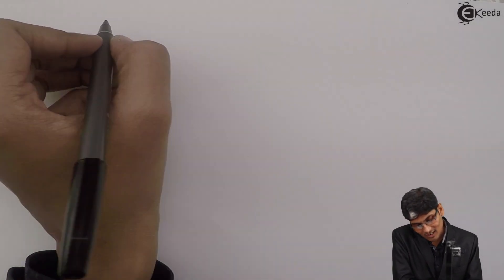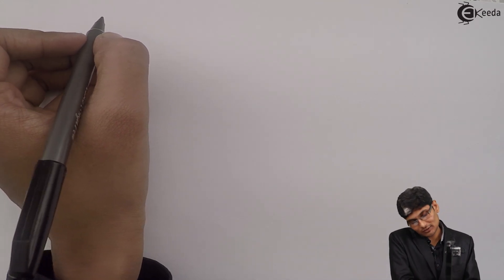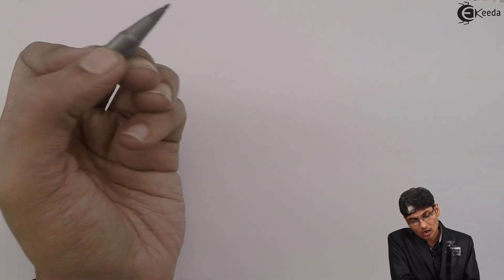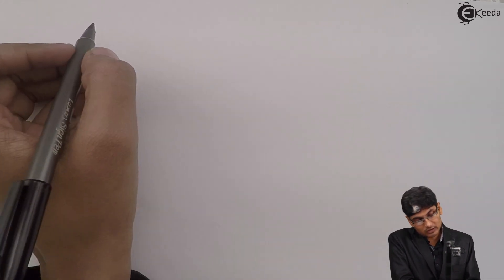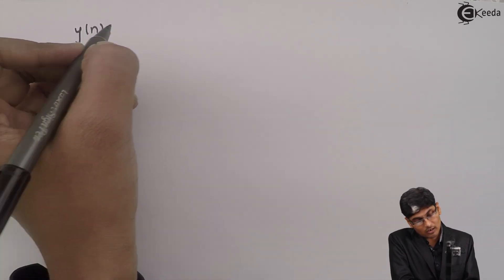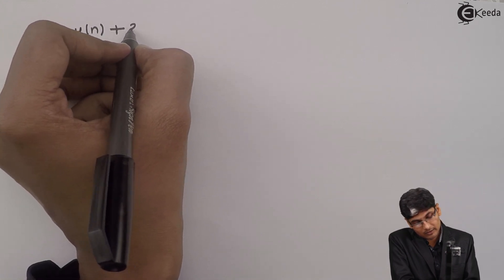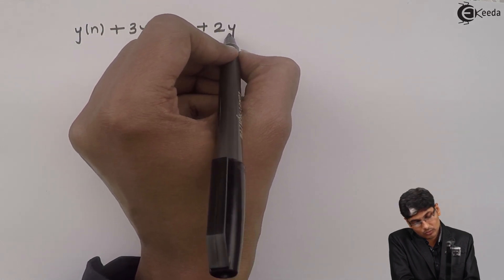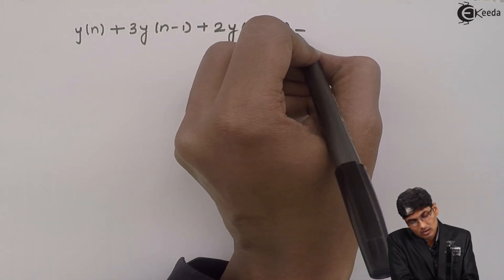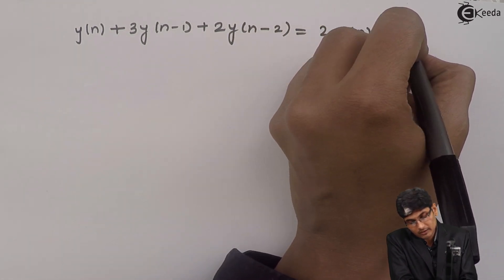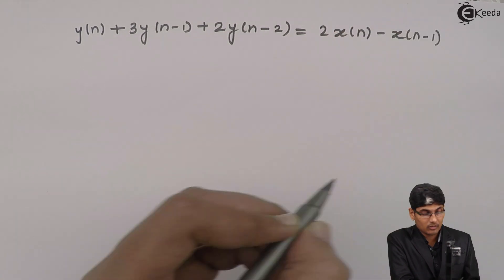Hello friends. Today we are going to see what could be the impulse response of a system whose transfer function or difference equation is given as y(n) + 3y(n-1) + 2y(n-2) = 2x(n) - x(n-1).